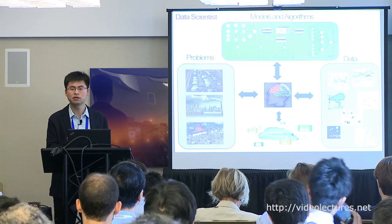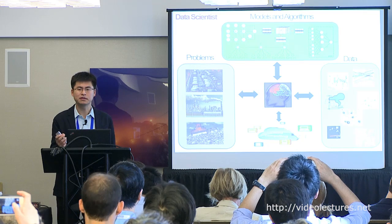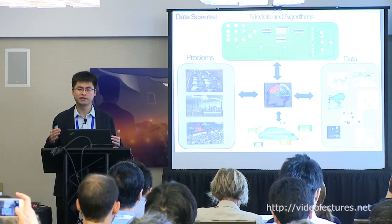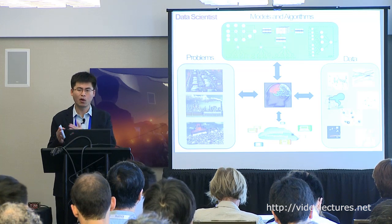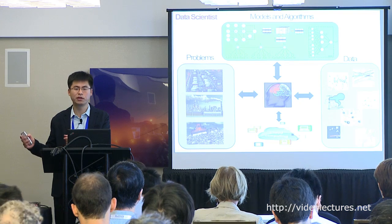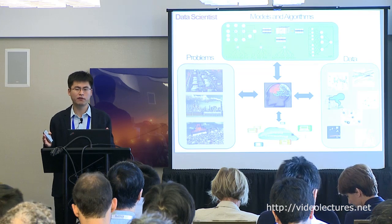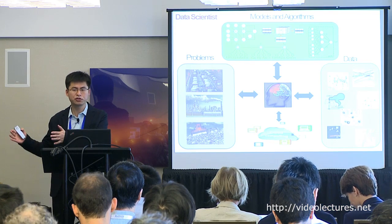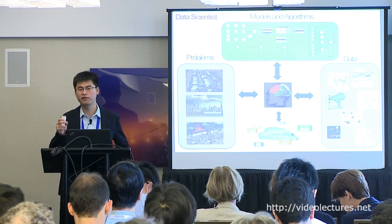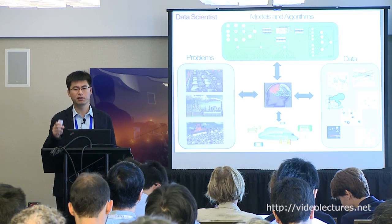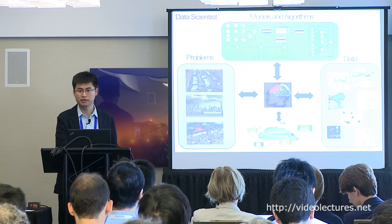Second, you need to understand the insight of each type of data, not just its representation. For example, GPS trajectories of taxis indicate not only traffic patterns on road segments, but also human mobility patterns in the city — where people get on and off. Further, human mobility indicates a region's function, which affects its economy and environment. Only with such insight can you apply data from domain A to solve problems in domain B.